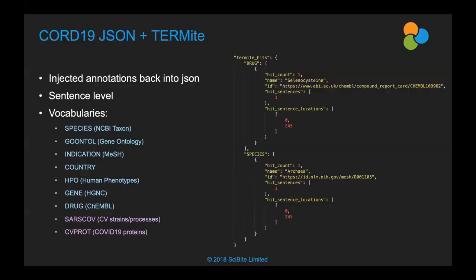Most people are probably familiar with the COVID-19 dataset. If not, this was a collection of papers released by the Allen Institute for AI. There was a call to action from the US government and others to try and use this data to do public research on COVID-19. When this data was released, we saw that a lot of people were trying to do named entity recognition on this data, many using machine learning based methods, which is great, but there are some limitations.